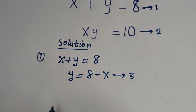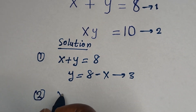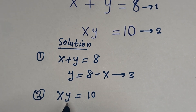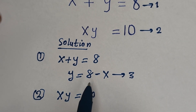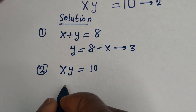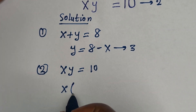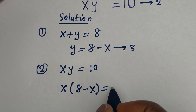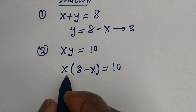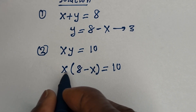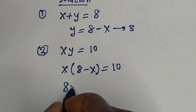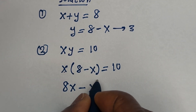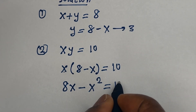Now, from equation 2, x times y is equal to 10. Let us substitute for y, which is 8 minus x. So x times (8 minus x) is equal to 10. Let's open the brackets: x multiplied by 8 gives 8x, minus x multiplied by x gives x squared, so 8x minus x squared is equal to 10.